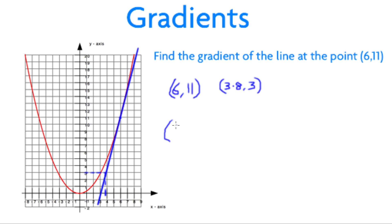Now we have a line with two coordinates similar to the example we had before. So, again we follow our rule, change in y over the change in x, which gives us 11 minus 3, and 6 minus 3.8. That gives us 8 divided by 2.2, which gives us the answer 3.64.